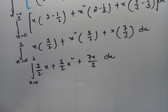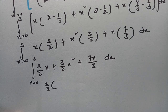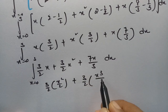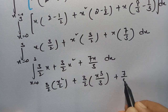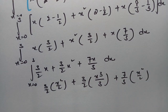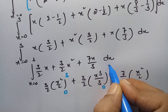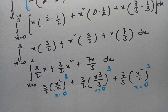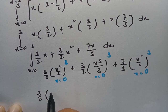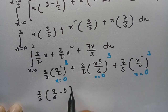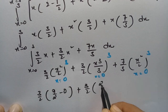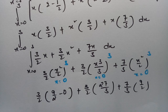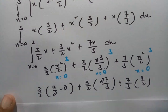Now I have to integrate with respect to x, keeping constants as they are. For x, this is x²/2; for x², this is x³/3; and 7/3 times x²/2, between limits 0 to 3. Substituting the upper limit: 3/2 times 9/2 minus 0, plus 3/2 times 27/3, plus 7/3 times 9/2.